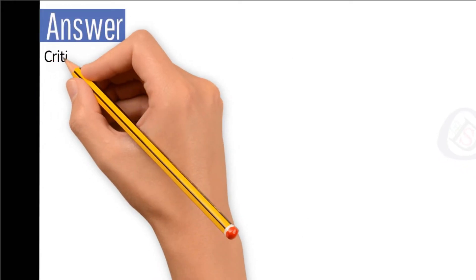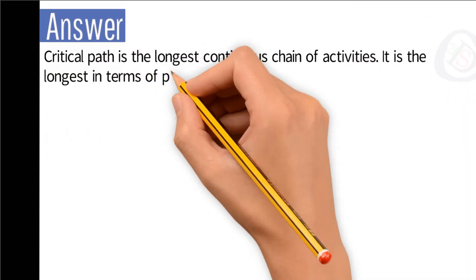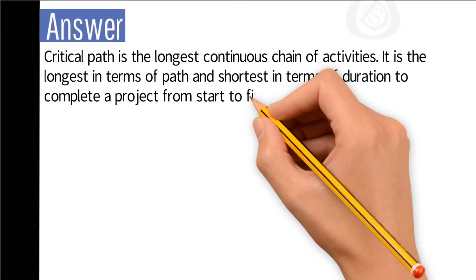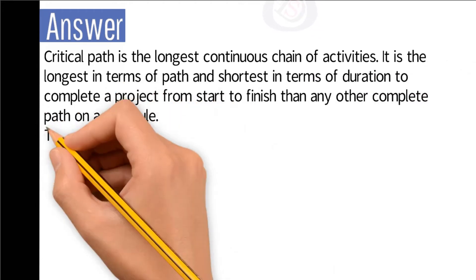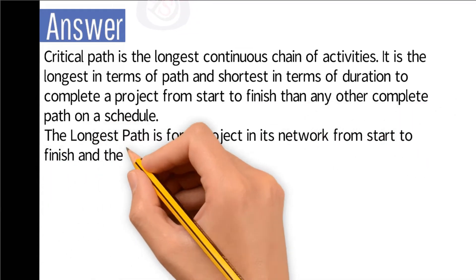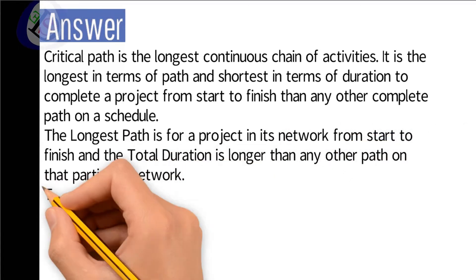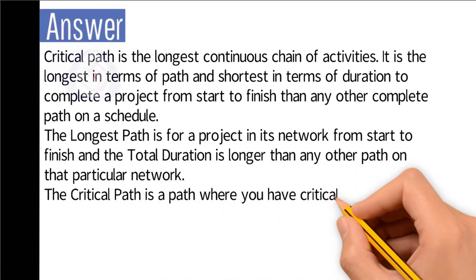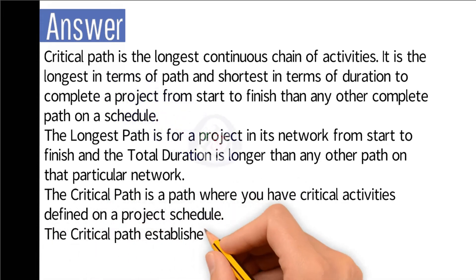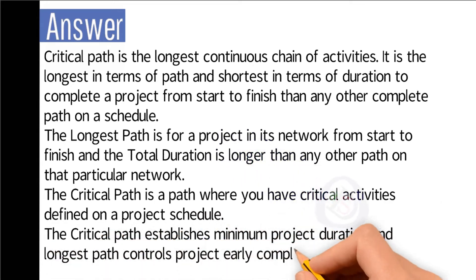Question number 56: Is the critical path the longest or shortest? Answer: The critical path is the longest continuous chain of activities. It is the longest in terms of path and shortest in terms of duration to complete a project from start to finish compared to any other complete path on a schedule. The critical path establishes minimum project duration and the longest path controls the project's early completion.